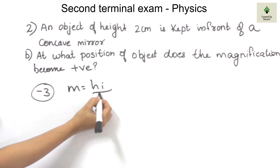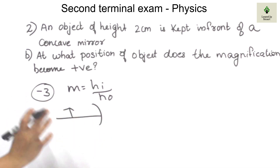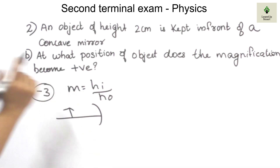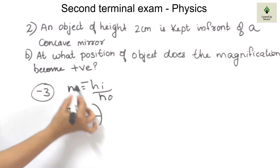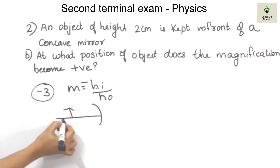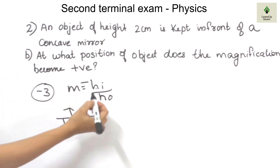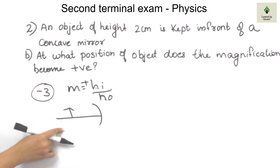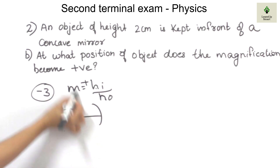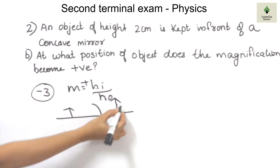When magnification is positive, the height of the image is also positive. The object height is positive. If the image is negative, it is inverted and magnification is negative. But if the image is positive, the magnification is positive. This is a virtual image. With the virtual image, the magnification becomes positive.